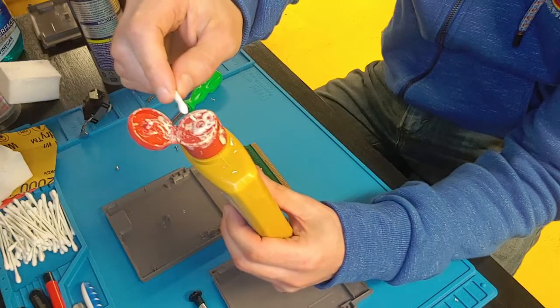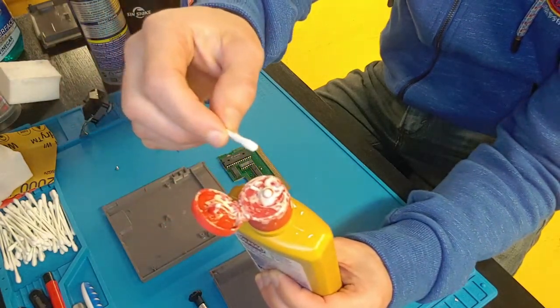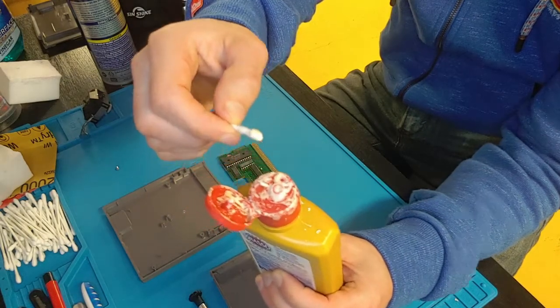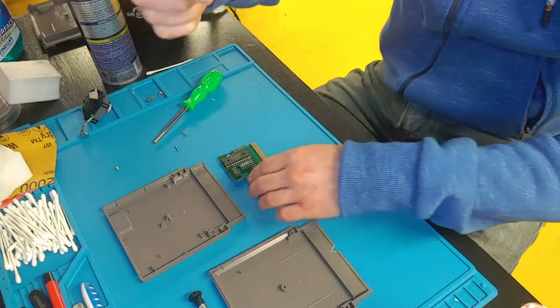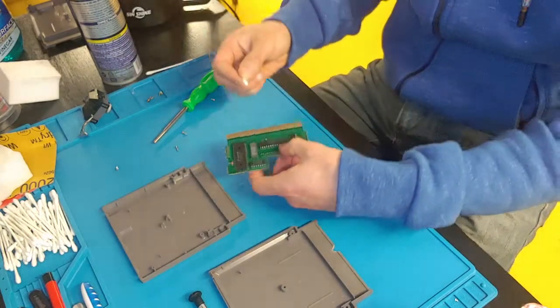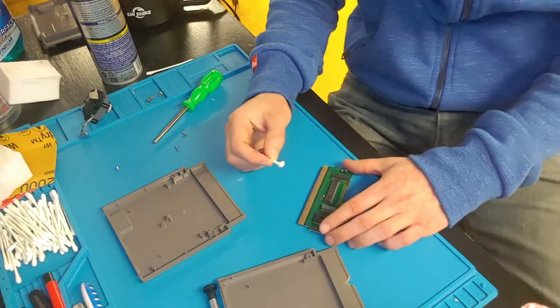And grab a Q-tip. You're just going to want to start with a little bit of Brasso in the beginning. Just put a little dab on the end of the Q-tip. Grab your board and just start applying the Brasso with the Q-tip to the dirty contacts.